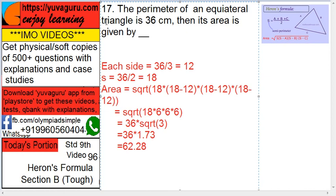The perimeter of an equilateral triangle is 36, then the area is given by... So here, perimeter is 36. Equilateral triangle means all sides are equal, so each side equals 36 upon 3, which is 12. Now what is S?